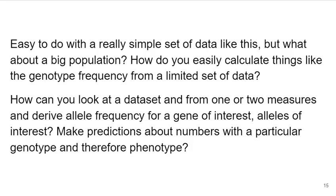It's not that hard to do that with a relatively simple set of data where you can look at and score every organism, but what do you do when it's a big population and you can only sample from within that big population? How do you relatively easily calculate things like genotype frequency from a limited set of information? Can you look at a data set from one or two measures, like perhaps phenotype frequency and knowledge of the genes, derive allele frequency, and make predictions about numbers of individuals with a particular genotype and therefore phenotype?